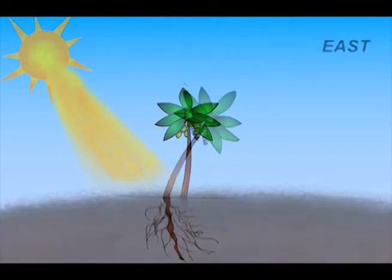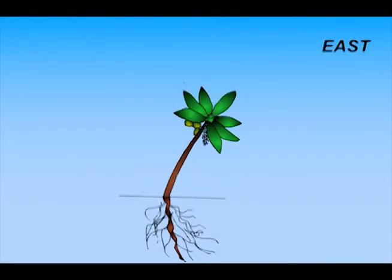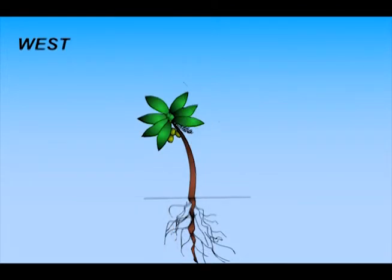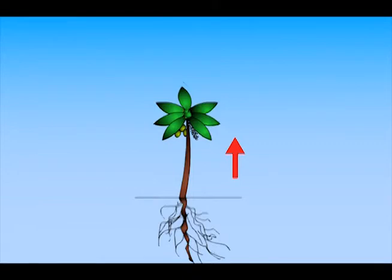During morning time, stem grows in east direction and during evening, it grows towards west. As a result, the plant grows in middle of east and west, which is straight upward.